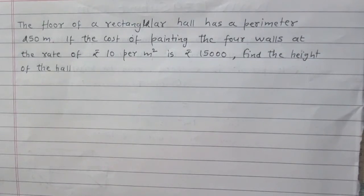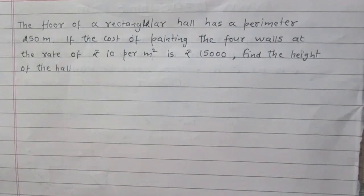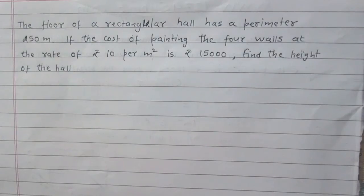We are given a rectangular hall. What do you mean by a rectangular hall? A rectangular hall has all its faces in the shape of a rectangle. So simply saying, a rectangular hall is nothing but a cuboid.